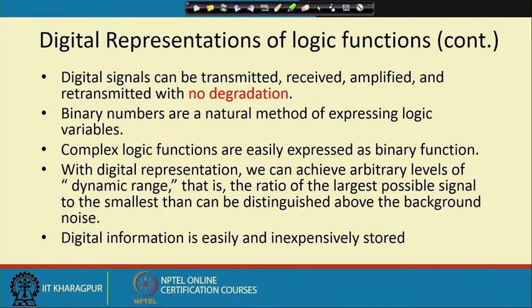Digital signals can be transmitted, received, amplified, and retransmitted with no degradation. If you are transmitting some digital value, ultimately what is transmitted is a bit — 1 or 0. If 1 is represented by plus 12 volt and 0 by minus 12 volt, and at the receiving station you get an intermediary value like minus 5 volt, you can say that minus 5 volt is close to minus 12, so it can be taken as 0. Digitally the value is not degraded — we can take it back to 0.